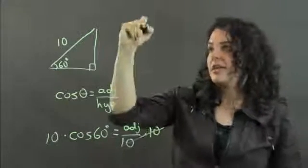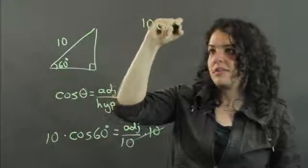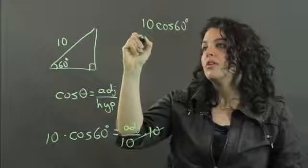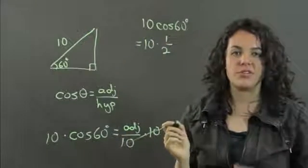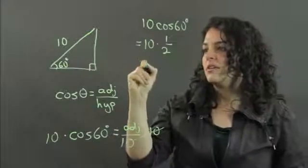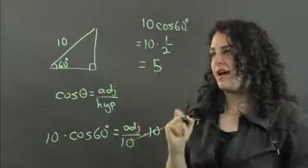And we get 10 times the cosine of 60 degrees, which is equal to 10 times 1 half, because the cosine of 60 degrees is 1 half. And that equals 5.